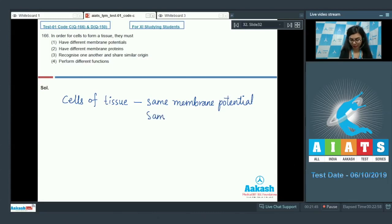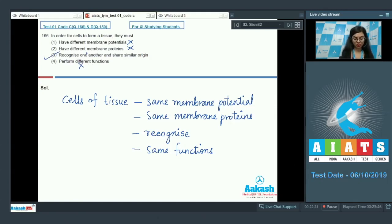They would also have similar or same membrane proteins. Recognize one another and share similar origin, that is true. They recognize one another, that's also true, and that's how they form layers of cells to form a tissue. Perform different functions? No, they perform same functions. Have different membrane potential is wrong, have different membrane proteins is also wrong, recognize one another that is true, and different functions is wrong.